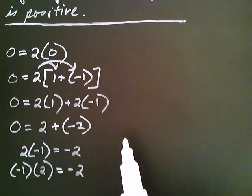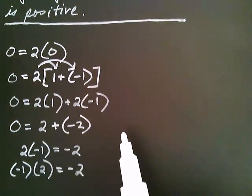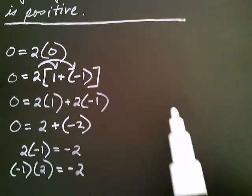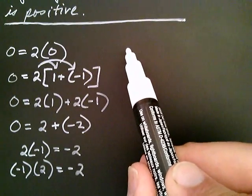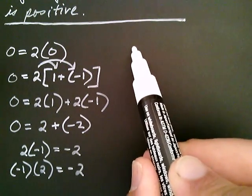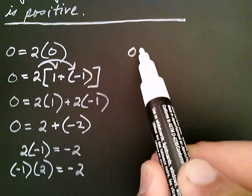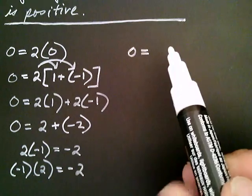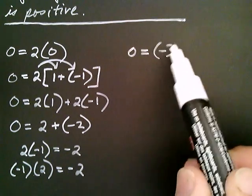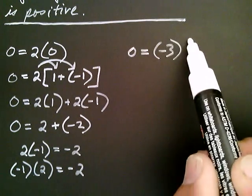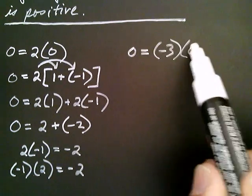...let's do it again with negative three. So: zero is equal to negative three multiplied by zero.